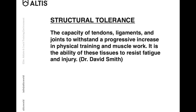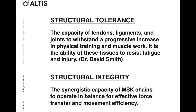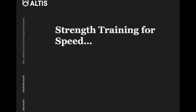Next, we have structural tolerance — the capacity of tendons, ligaments, and joints to withstand a progressive increase in physical training and muscle work, and the ability of these tissues to resist fatigue and injury. We pair that with structural integrity, the synergistic capacity of the musculoskeletal system to operate in balance for effective force transfer and movement efficiency. These two terms will come up in each of the different contexts I present on today.